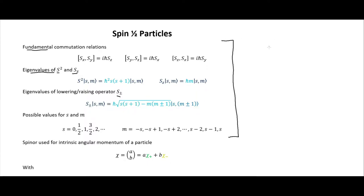When we talk about angular momentum for an orbit — say we have the Sun and the Earth orbiting around it — that has orbital angular momentum. But if we zoom in on the Earth, it's also spinning, and that spin is essentially describing the orbit of each little patch of dirt as it orbits the center of the Earth. So spin and orbital angular momentum can be thought of in pretty much the same way.